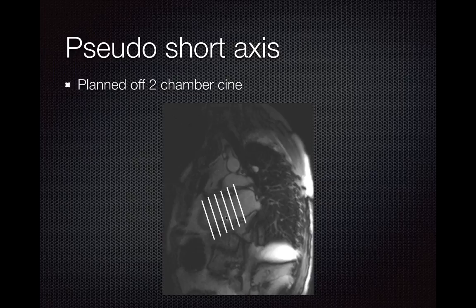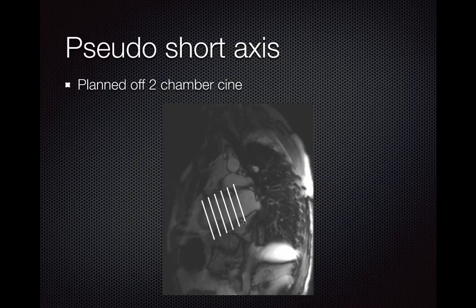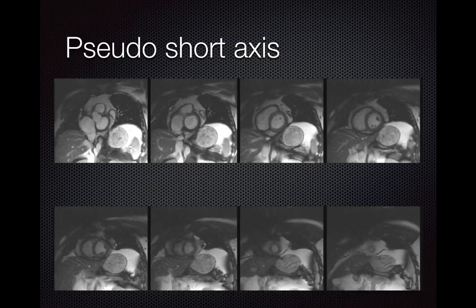From the two-chamber view, we set up and acquire a stack of short-axis images. We align the plane of the short-axis images with the mitral valve — this line is at the level of the mitral valve and lined up in the same plane. We also acquire a few slices into the left atrium, which will be needed later for the LVOT view. Here's our short-axis stack, with at least one image extending into the left atrium and the rest going through the left ventricle.